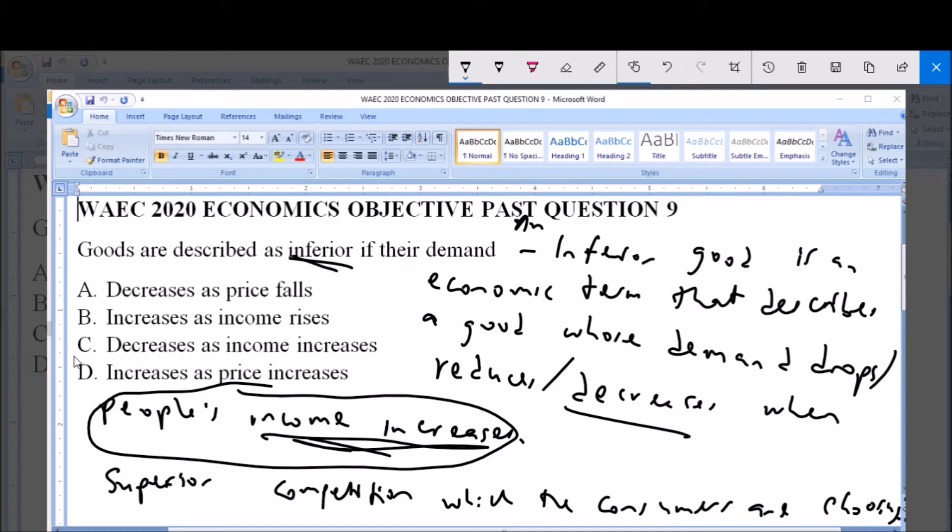as income increases. That is option C, which is the correct answer to this question. Thank you, and please subscribe to this channel for more videos and more past questions and answers.